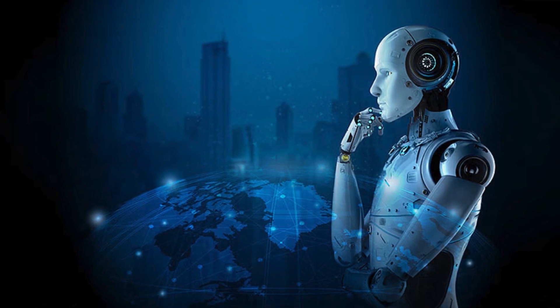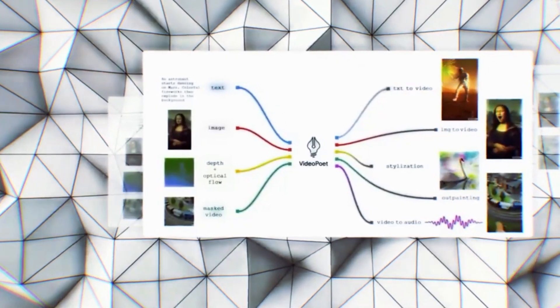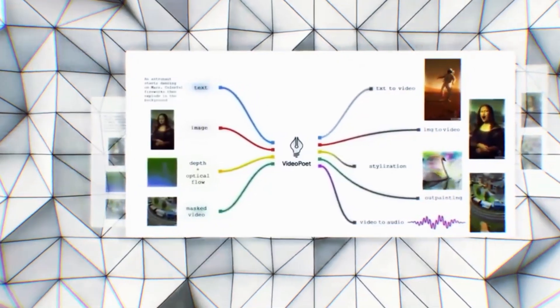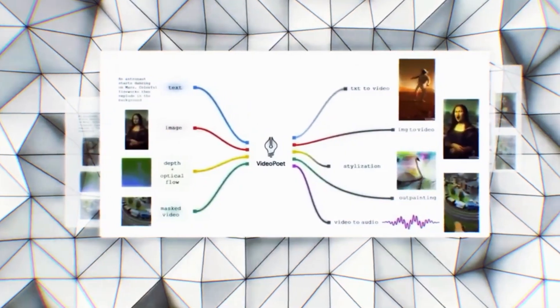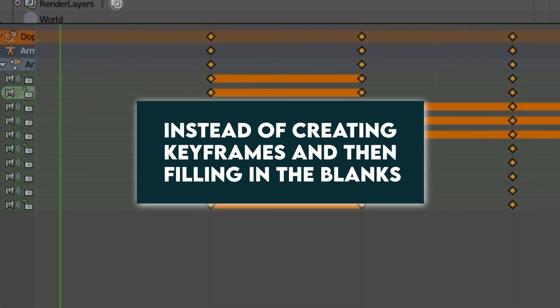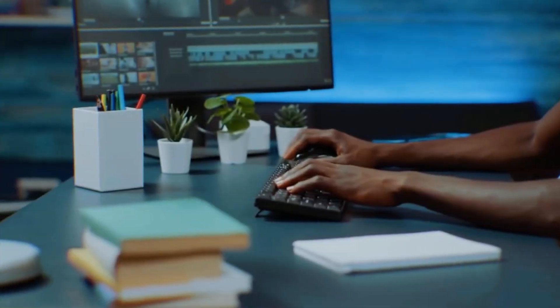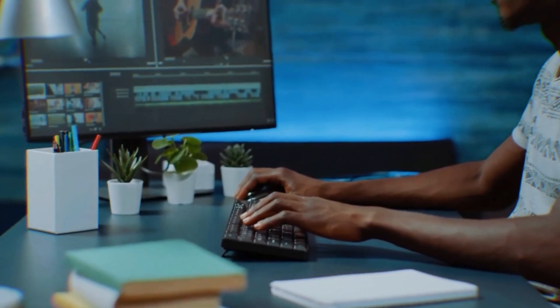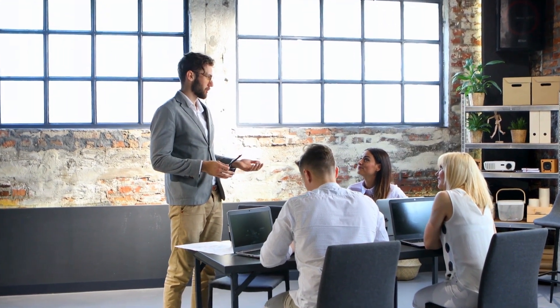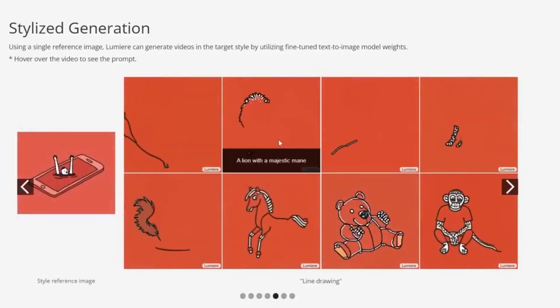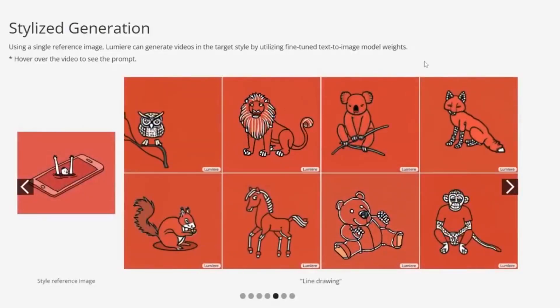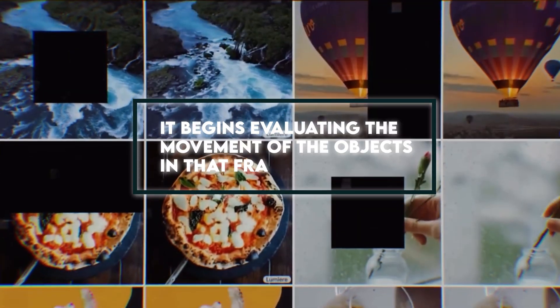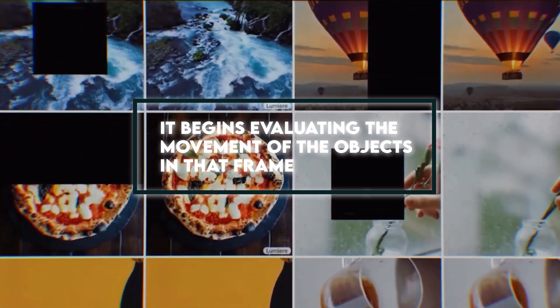This state-of-the-art AI replaces Google's recent zero-shot diffusion model Video Poet and a text-to-video diffusion model. Instead of creating keyframes and then filling in the blanks, Lumiere processes every frame in a video at once by utilizing STU-Net architecture. It begins by utilizing a prompt to create a foundation frame — consider this as establishing the scene — then it begins evaluating the movement of the objects in that frame to create more frames that blend together and provide the appearance of fluid motion.